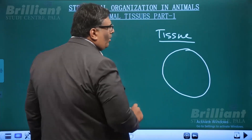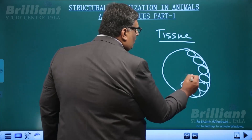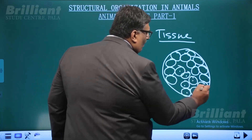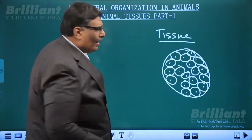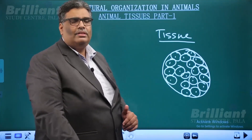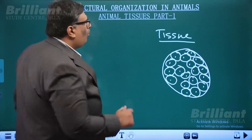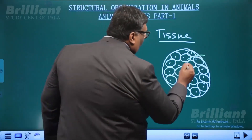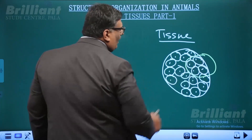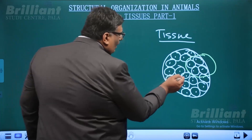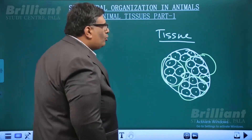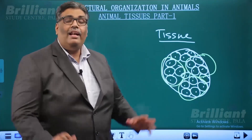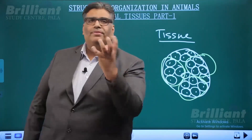Consider a multicellular organism where you have many cells — the body is formed of many cells. In this multicellular organism, from Cnidaria onwards, there is something we call tissues. A tissue is a group of cells specialized to perform a particular function. There are different groups of cells in multicellular organisms, each group performing a specific role — work is divided among different groups.